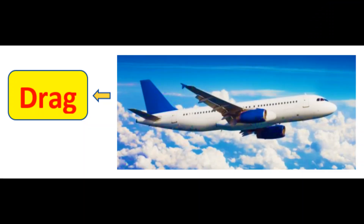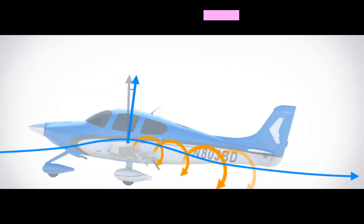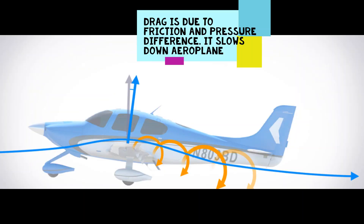The next force is drag. Drag is caused by friction and air pressure difference. Drag slows down the aeroplane.